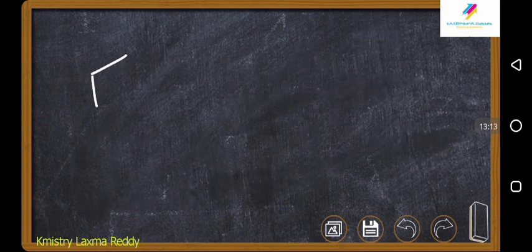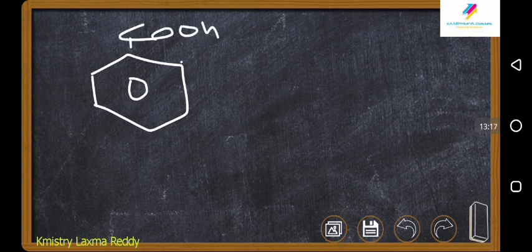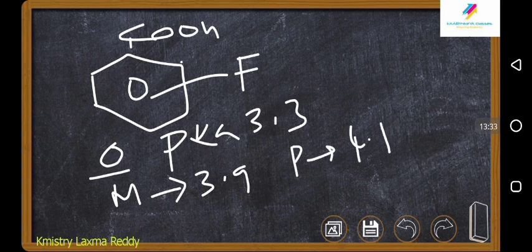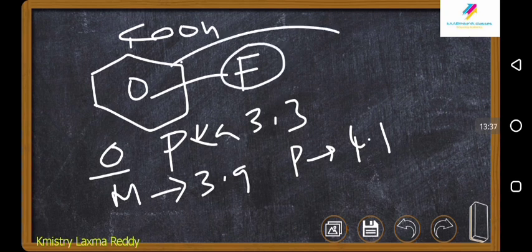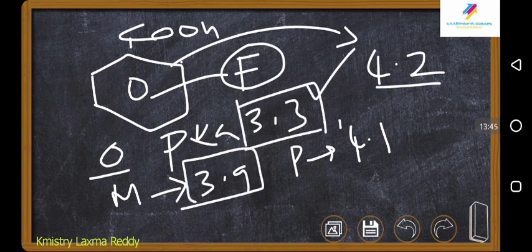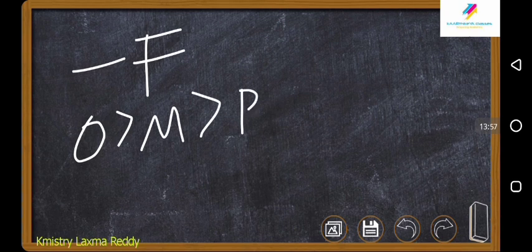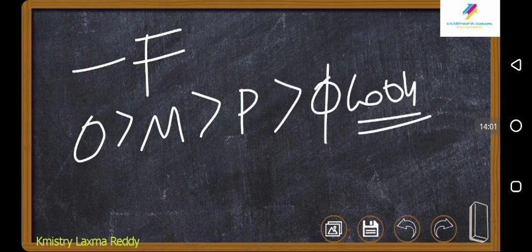For example, if fluorine is present at ortho position, the pKa value is 3.3. At meta position its value is 3.9. At para position its value is 4.1. And normal benzoic acid without any other group is 4.2. Lower the pKa, stronger is the acid. So ortho is stronger, then meta, then para, then finally benzoic acid. There is no need to remember the pKa values specifically. The minus I effect is distance-based — we are explaining this based on distance.